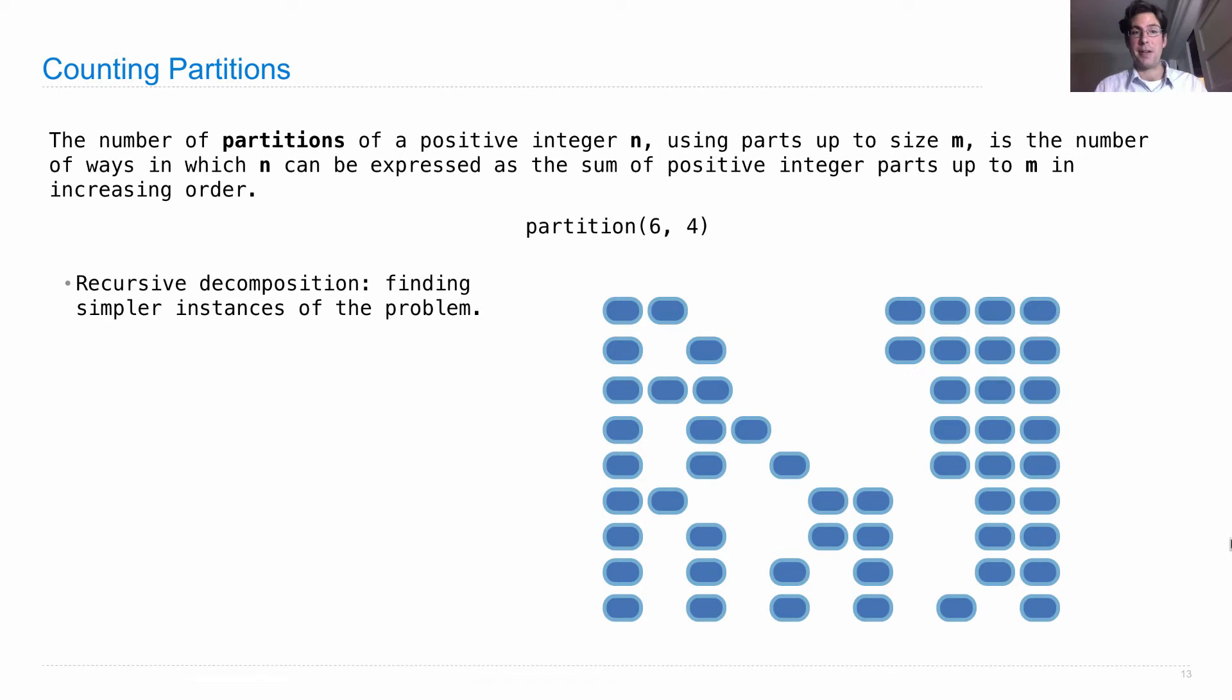We're going to look for a recursive decomposition. So we're going to find simpler instances of the same problem. We want this partitioning problem to be solved using partitioning. And we're going to explore two different possibilities, creating a tree recursive process. One possibility is that we'll use at least one partition of size 4. And the other is, we won't use any 4s at all. So that divides up all of the different possibilities into two groups. We have the ones that include a partition of size 4 up here, and all the ones that don't down there.